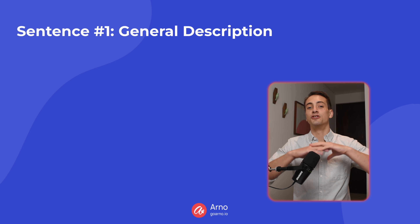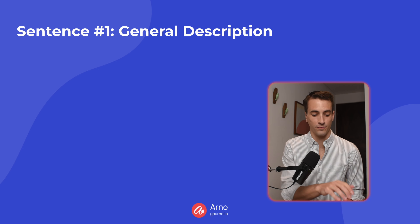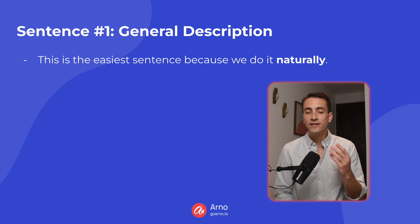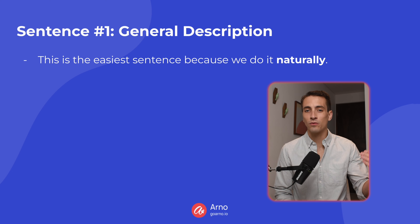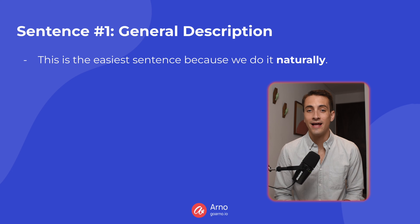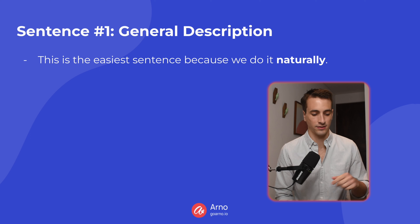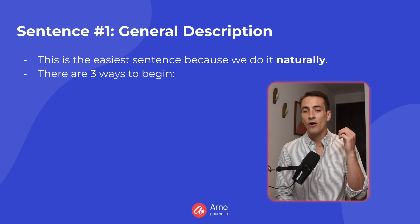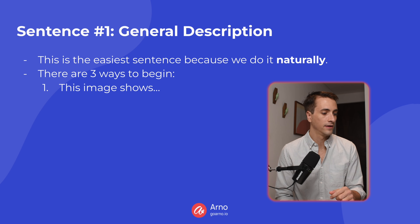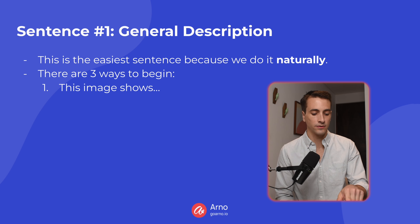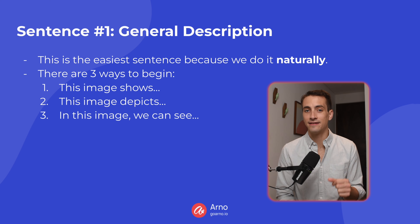This template consists of three sentences. Your first sentence should be a general description of the photo. This is going to be the easiest sentence for you to write, most likely, because writing a general description of a photo is something that comes very naturally to us. There are three ways that you can begin this first sentence, and they are: this image shows, this image depicts, and in this image we can see.